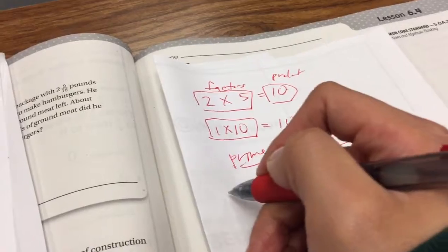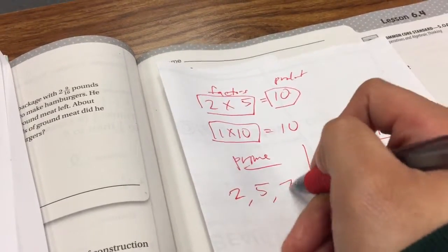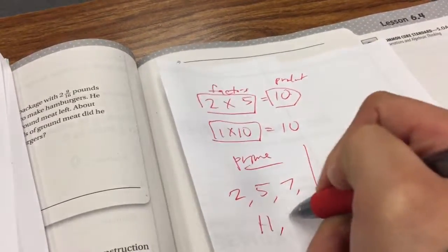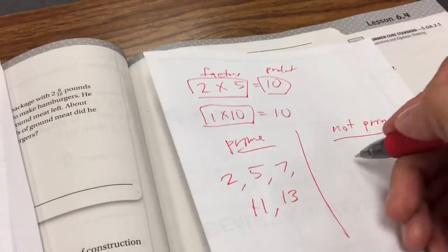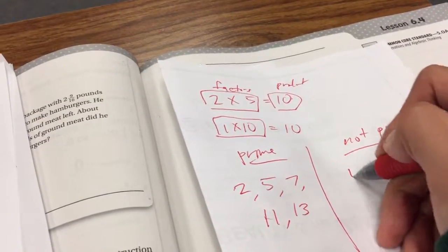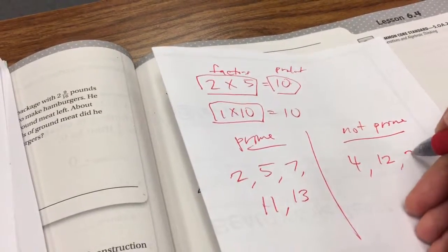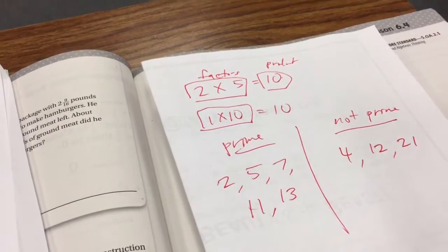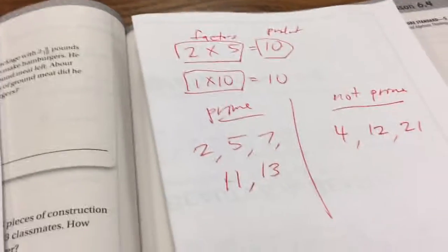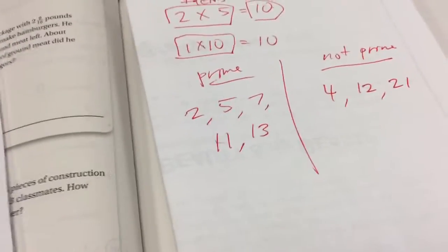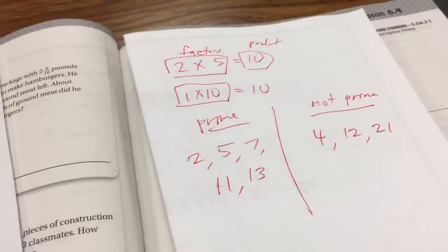These are prime numbers, and these are not prime. I'm just going to say not prime because they don't have the word here, but they're composite numbers. The numbers 2, 5, 7, 11, 13 are prime. Numbers that are not prime include the numbers 4, 12, 21, and so forth. I'm going to give you a couple seconds. What do you think makes a number prime, and what do you think makes a number not prime?